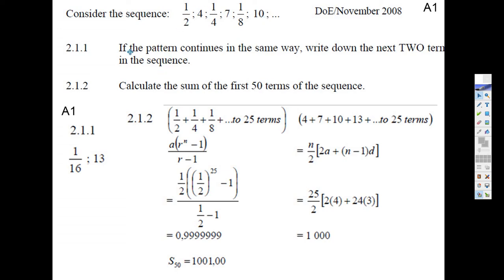Okay, it says here: if the pattern continues in the same way, write down the next two terms. Well, it goes 1/2, 4, 1/4, 7, 1/8, 10 - hey, the next one's going to be a fraction and then multiply it by half. The next one must be 1 over 16, and the next one must be 3 more than 10, so 1 over 16 and 13, if you just saw the pattern.